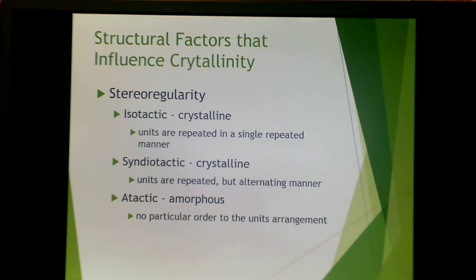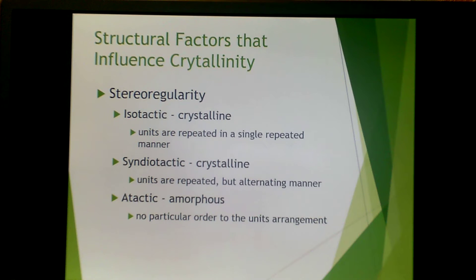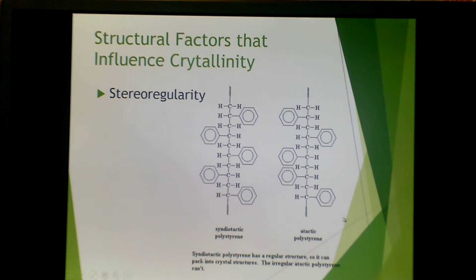Stereo-regularity is also a structural factor. Isotactic polymers tend to be crystalline — units are repeated in a similar manner and can pack well. Syndiotactic polymers also have units repeated in an alternating manner and can be crystalline. But atactic polymers tend not to be crystalline at all; they tend to be amorphous because of their random order that doesn't pack as well. For example, syndiotactic polystyrene allows regular packing of chains, whereas atactic polystyrene is much more irregular and disrupts that structure.